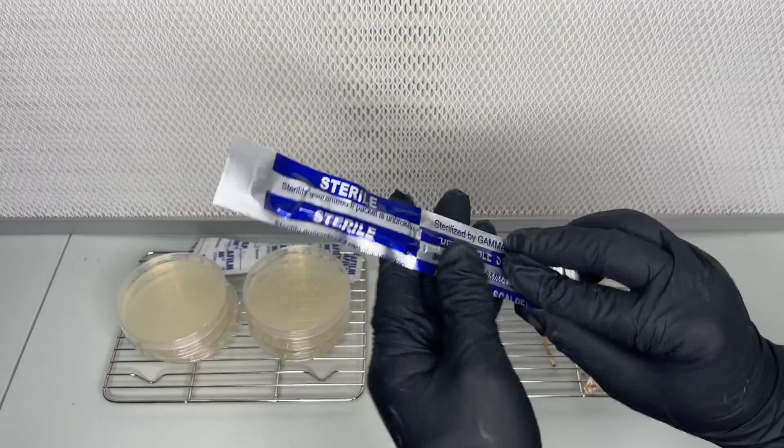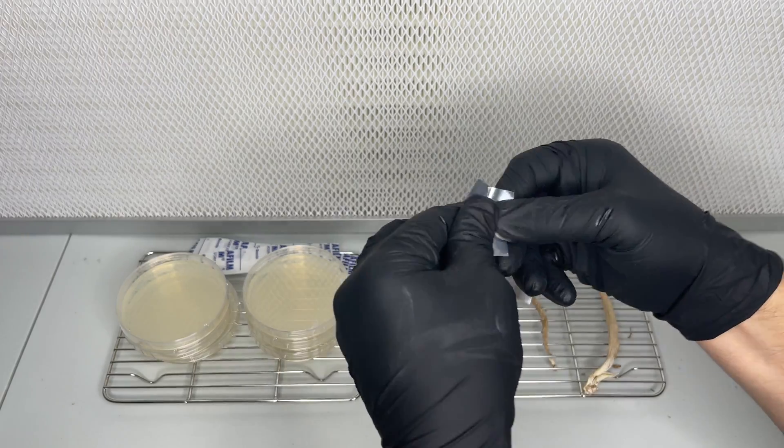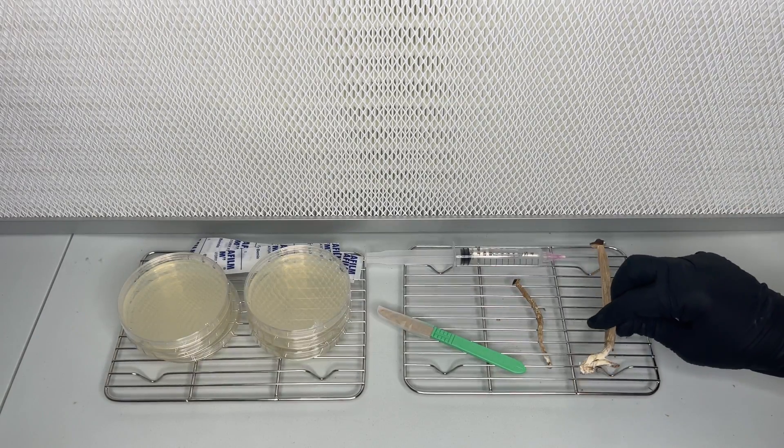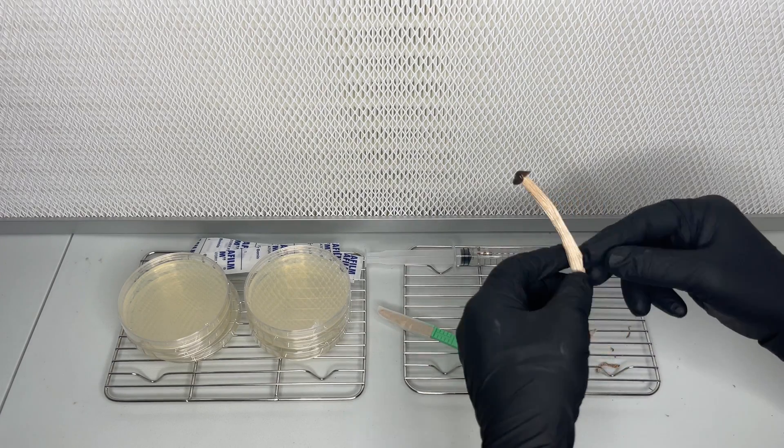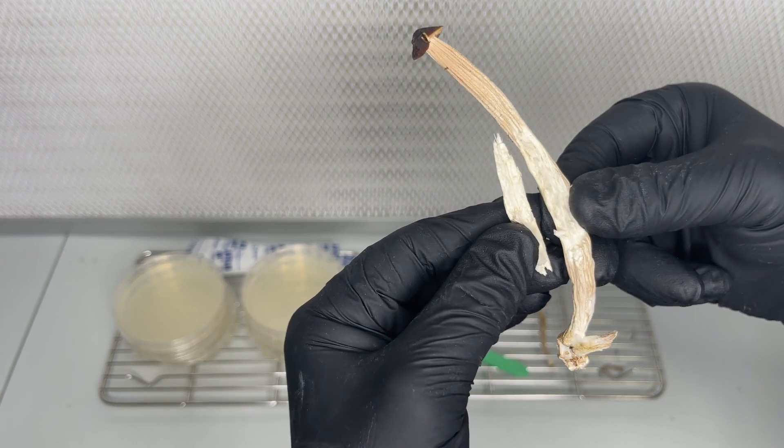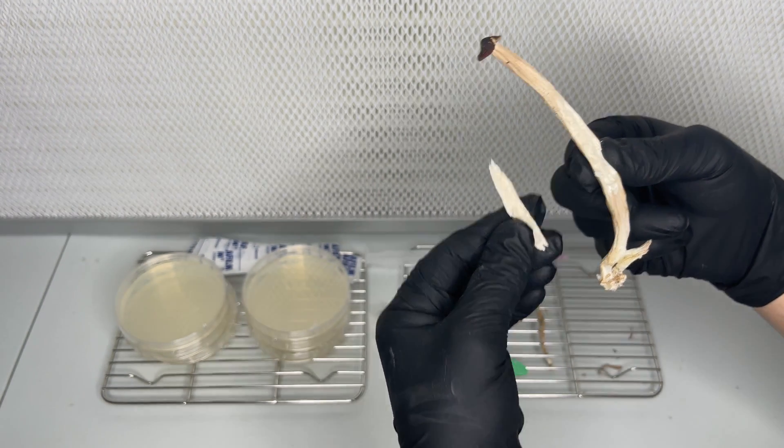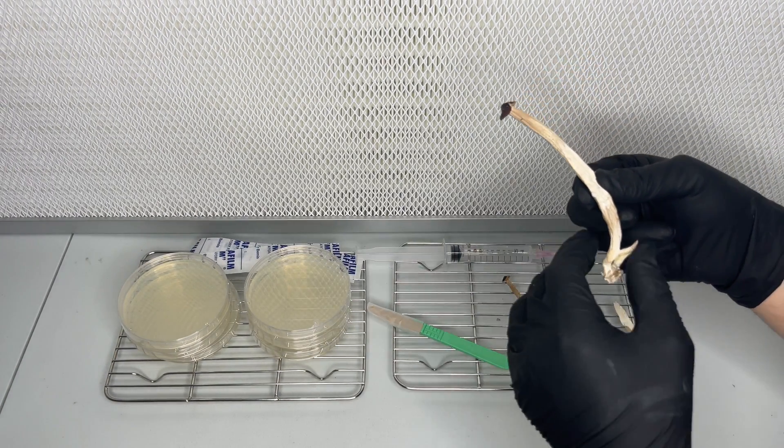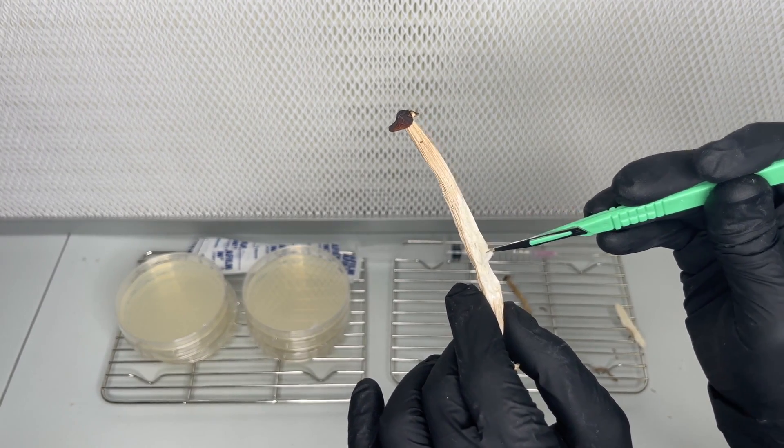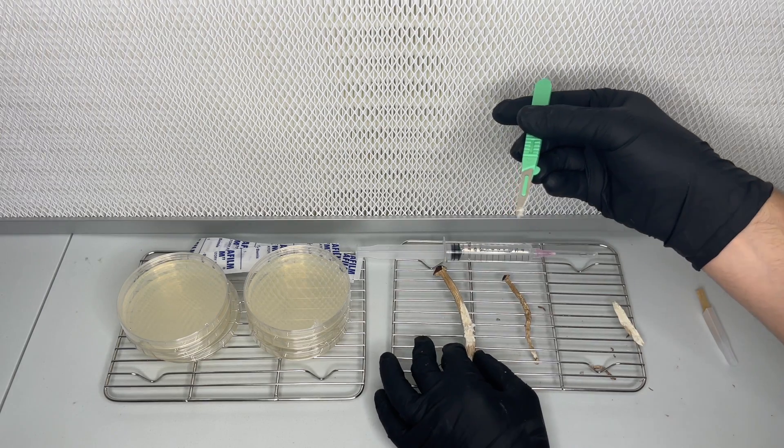I use a disposable sterile scalpel to transfer the tissue to the agar plates. The first mushroom is one that was dehydrated at 130 degrees Fahrenheit and I split it open exposing the tissue on the inside and used the sterile scalpel to transfer a piece of the dried tissue to the agar plates.